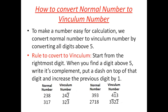How to convert a normal number to a Vinculum number? To make a number easy for calculation, we convert it to Vinculum by converting all digits above 5. The rule is: start from the rightmost digit. When you find a digit above 5, write its complement, put a bar on the top of that digit, and increase the previous digit by 1. Continue this process till the leftmost digit.